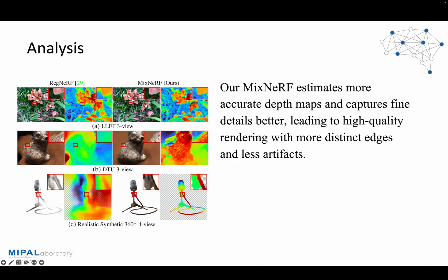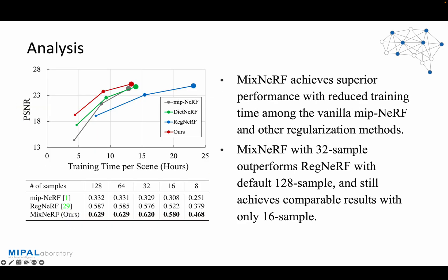In contrast, MixNeRF leverages the mixture density model without additional smoothing from unseen rays, resulting in more efficient and precise predictions of depth maps. MixNeRF enhances the efficiency of both the training and inference phases by effectively learning the 3D geometry without requiring additional burdensome training resources. Figure 1 demonstrates the superior performance of MixNeRF compared to vanilla MIPNERF and two representative regularization methods on the LLFF dataset, while requiring reduced training time. Moreover, in terms of inference efficiency, MixNeRF with 32 samples outperforms REGNERF with the default 128 samples and remains comparable even with just 16 samples.